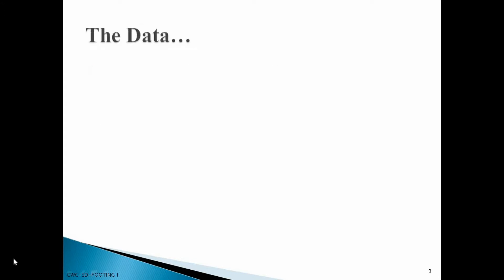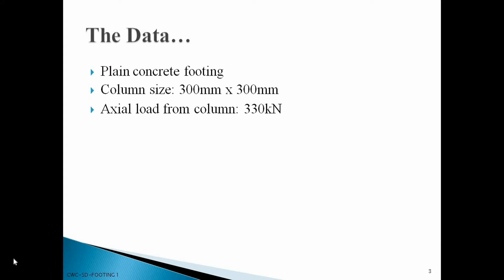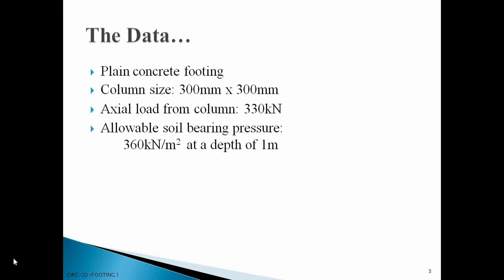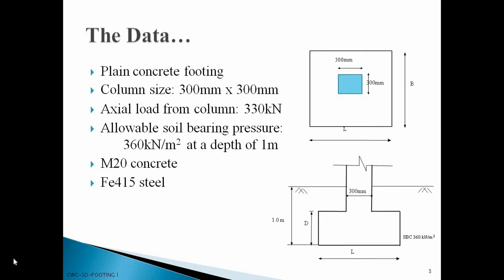Let us analyze the given question. We have to design a plain concrete footing. The dimension of the column which our footing carries is 300 mm by 300 mm. The column carries an axial load of 330 kN. The allowable bearing pressure of the soil where the footing has to be laid is 360 kN per m² at a depth of 1 m, meaning the bottom of our footing should be at 1 m below ground. Concrete is M20 grade and steel is Fe415. This is how the given data looks in plan and section.